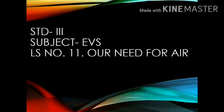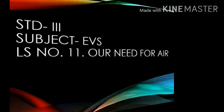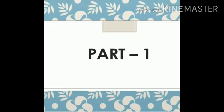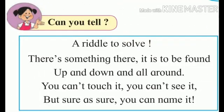Standard third subject EVS lesson number 11: our need for air. Now students, there is a small riddle for you — you have to guess the right answer. There is something that is to be found up and down and all around. You can't touch it, you can't see it, but sure as sure you can name it. Yes, students — the answer is air!